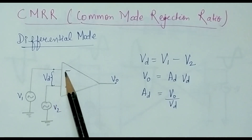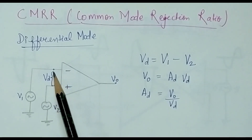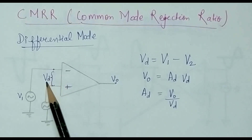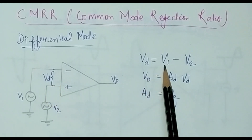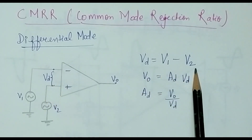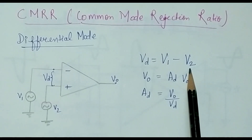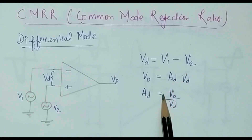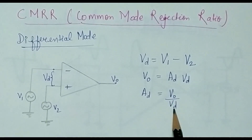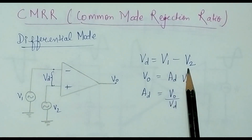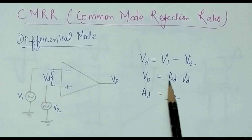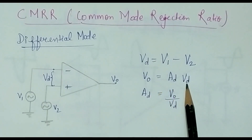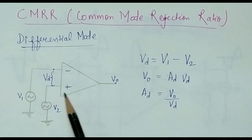So what will be the input voltage? The input voltage is denoted by VD, and VD equals V1 minus V2. As I told you in the previous class, gain is output voltage divided by input voltage, so the input voltage is V2 minus V1. The output V0 can also be written as AD multiplied by VD. This covers the differential mode of operation.